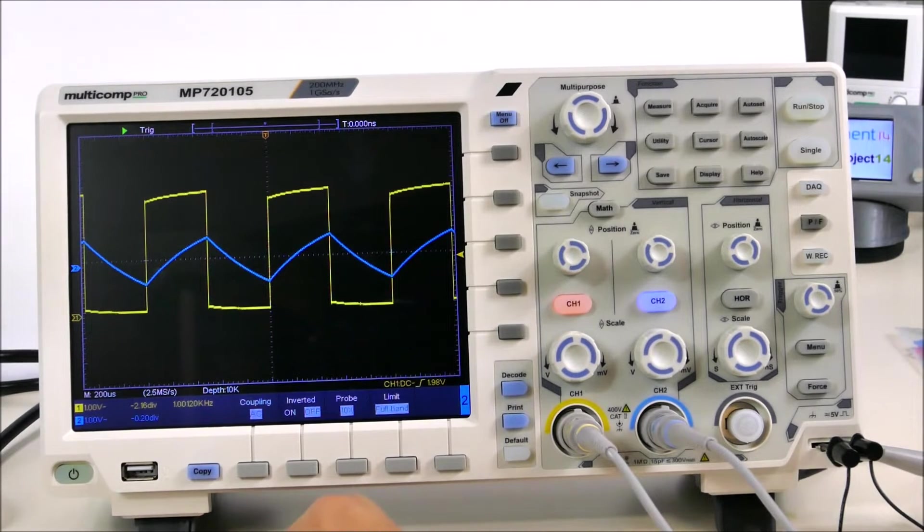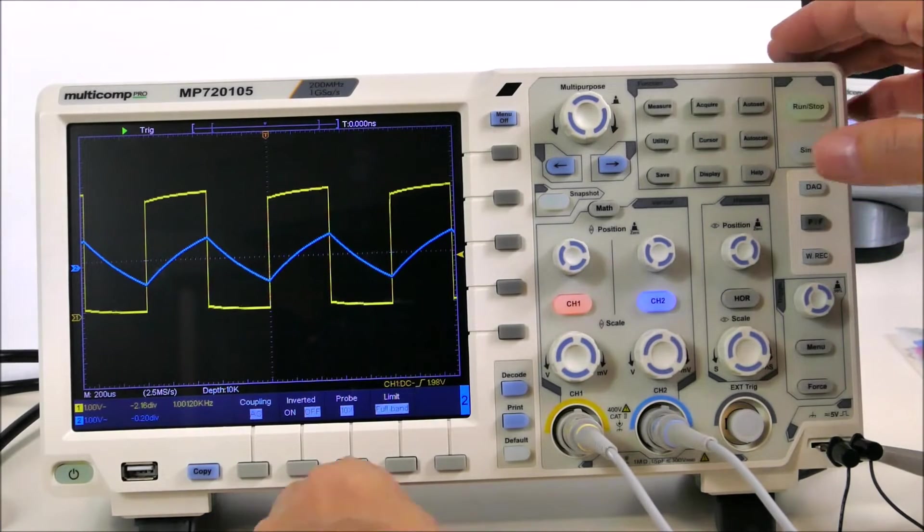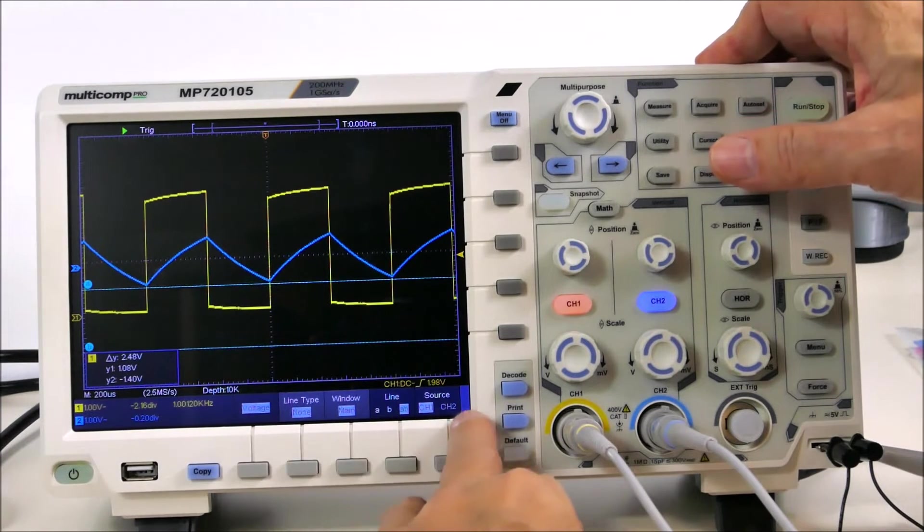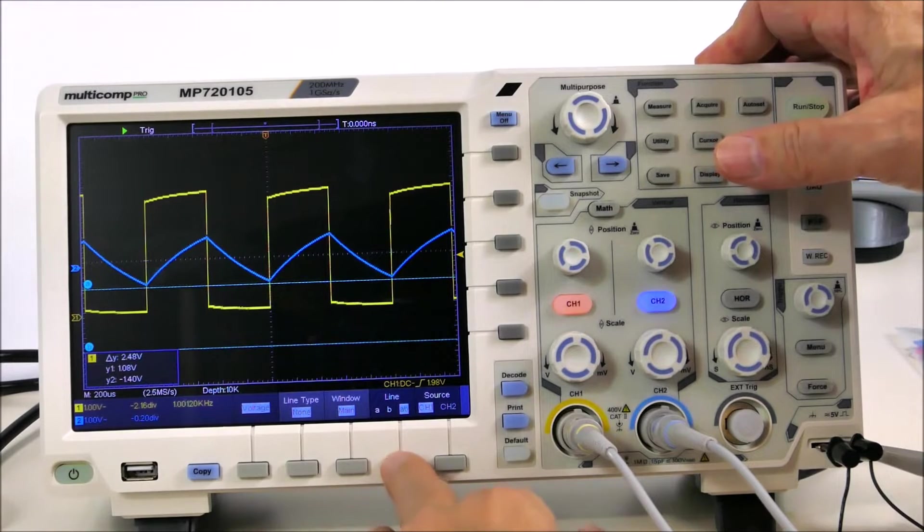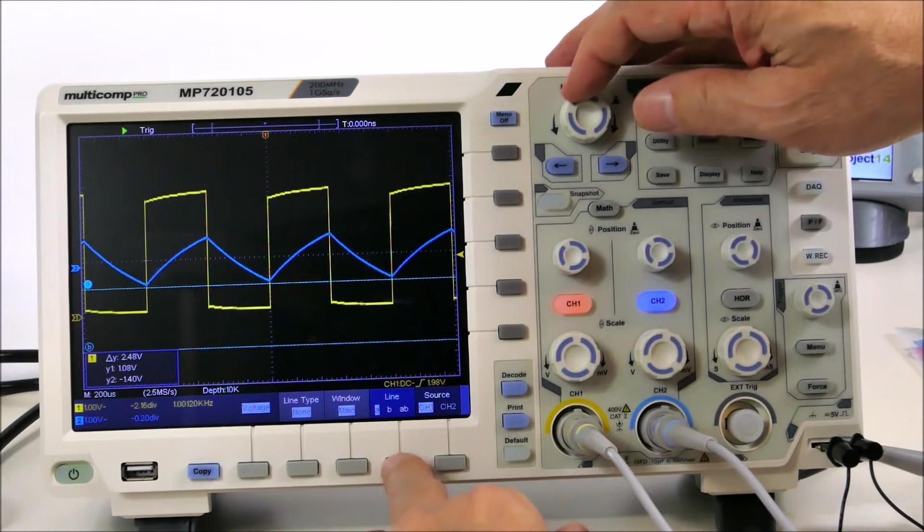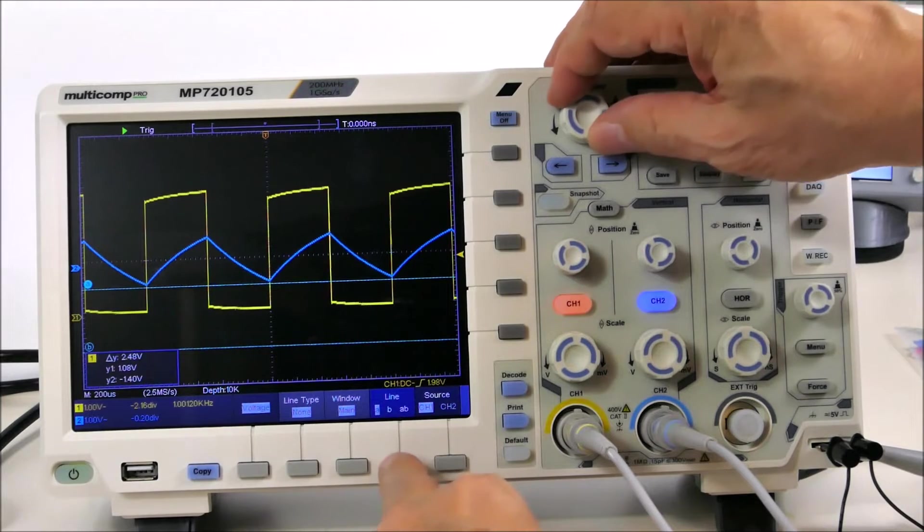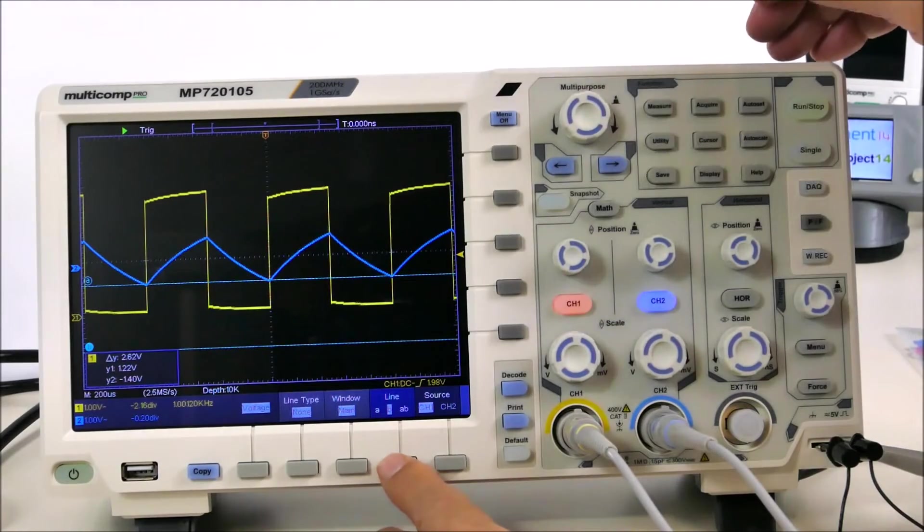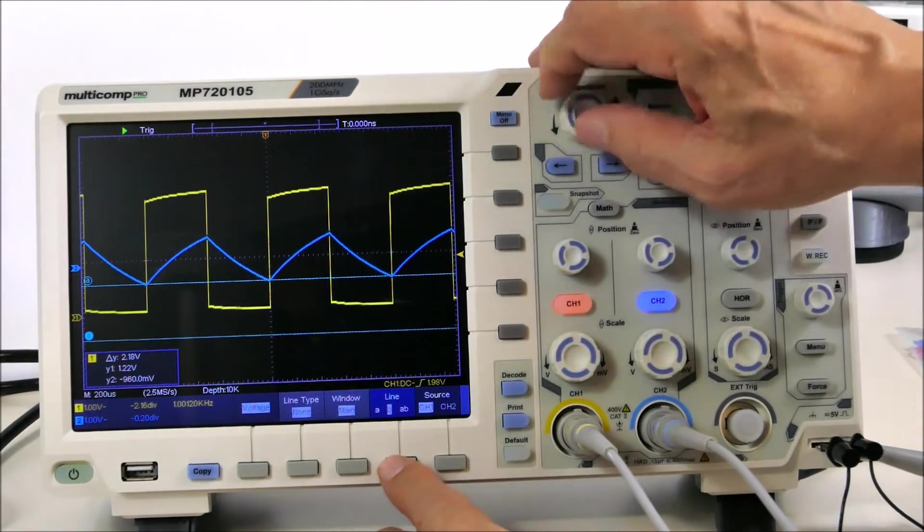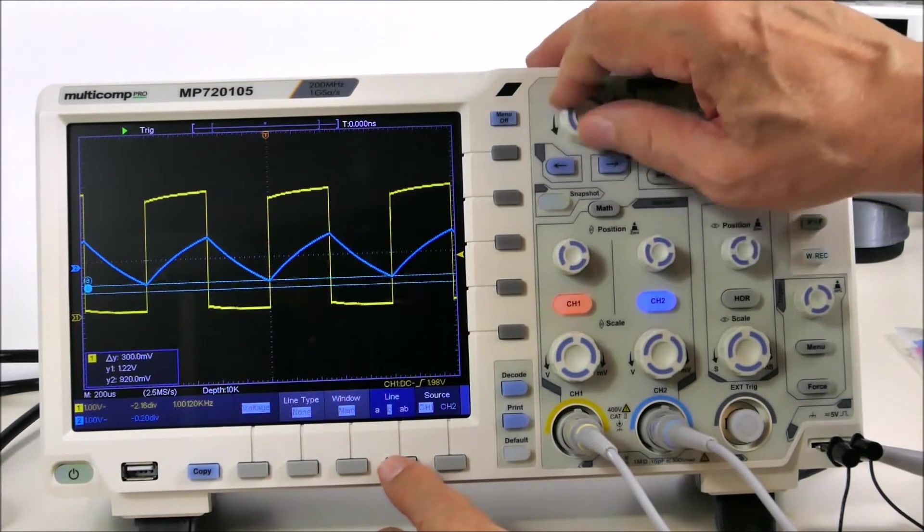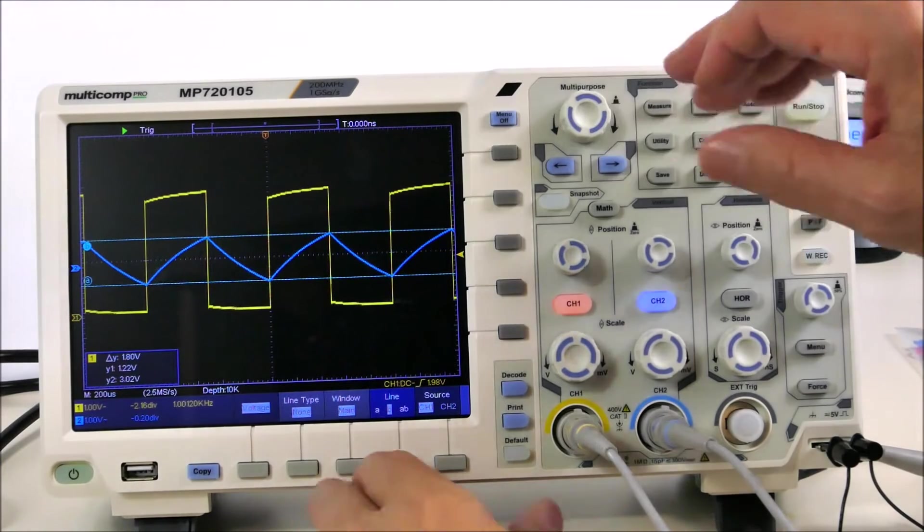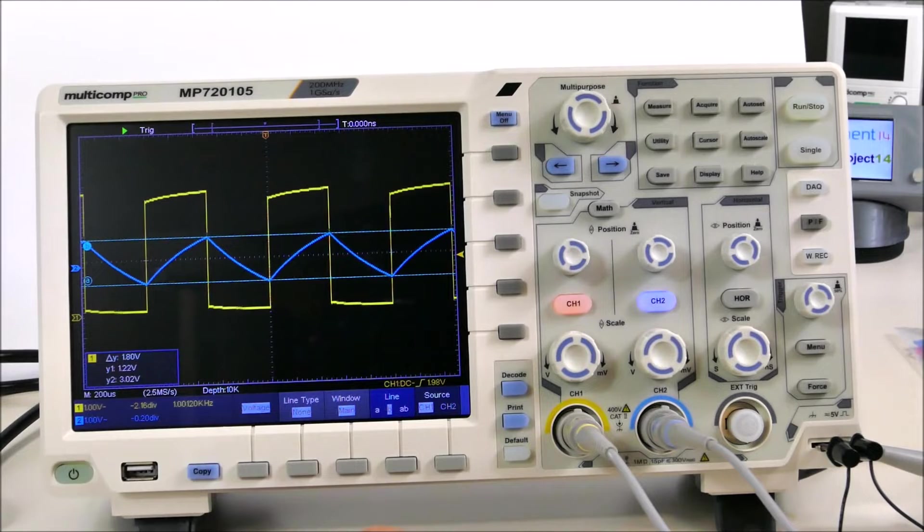One of the interesting things here is that we can control some of the display and cursors and so on here. So the cursors brings up an upper level menu where we can select which cursor we're going to manipulate. So this is cursor A. And we can set it to the bottom of the waveform. Then select cursor B and move that up to the top of the waveform. And down here it says 1.8 volts is the delta between the two.